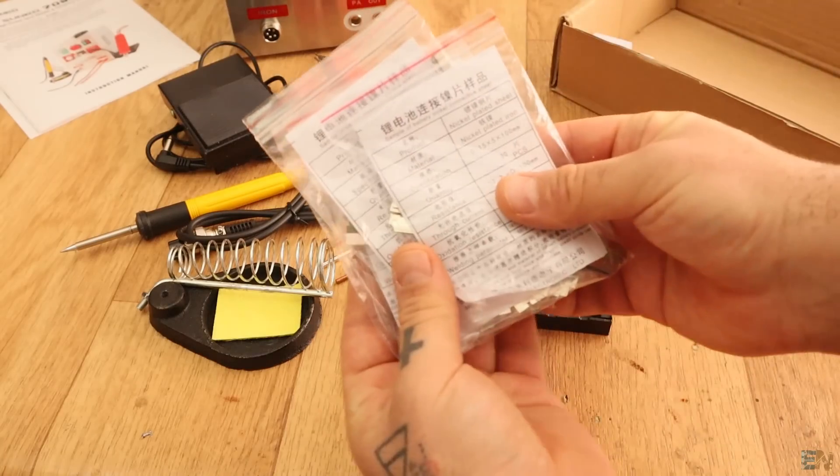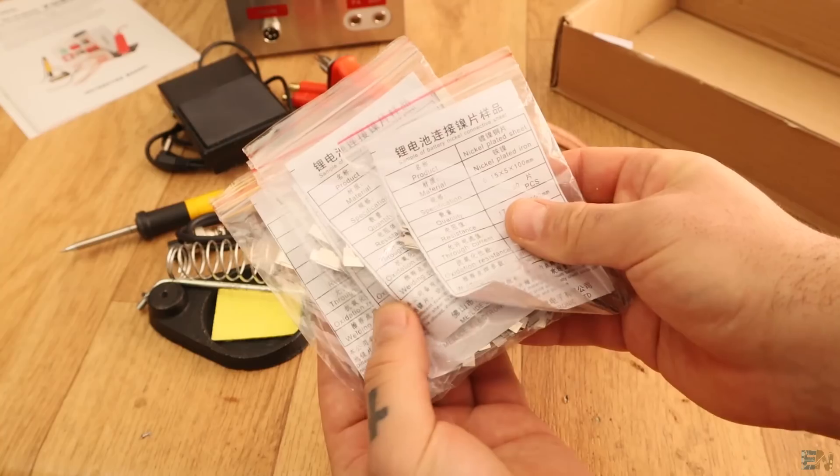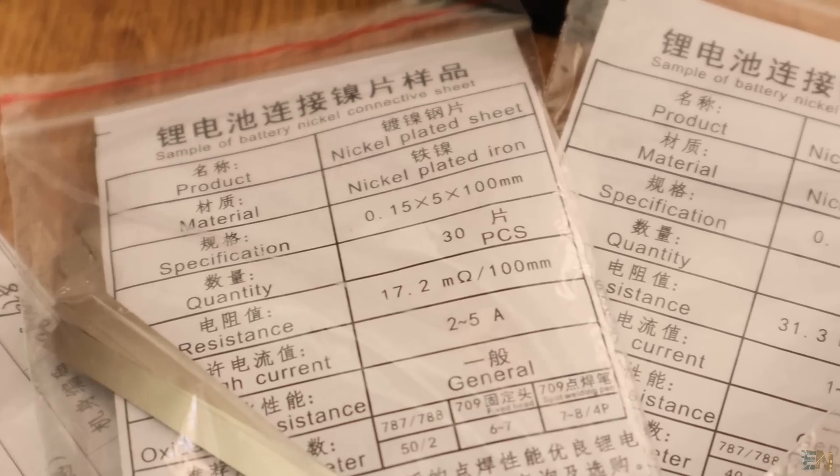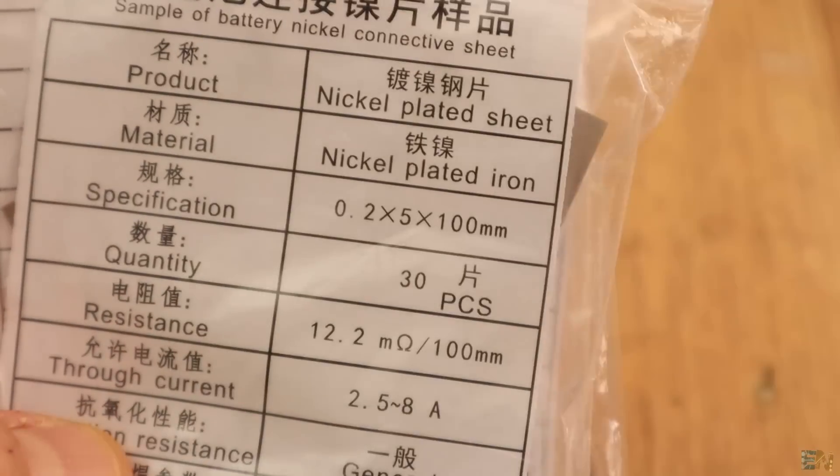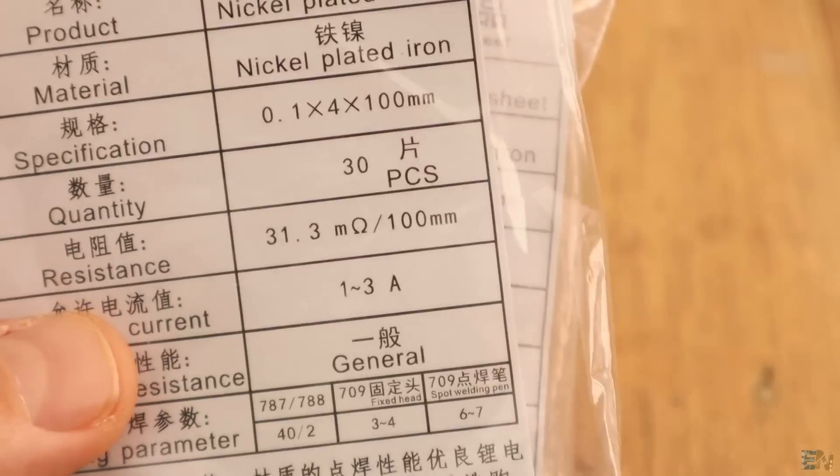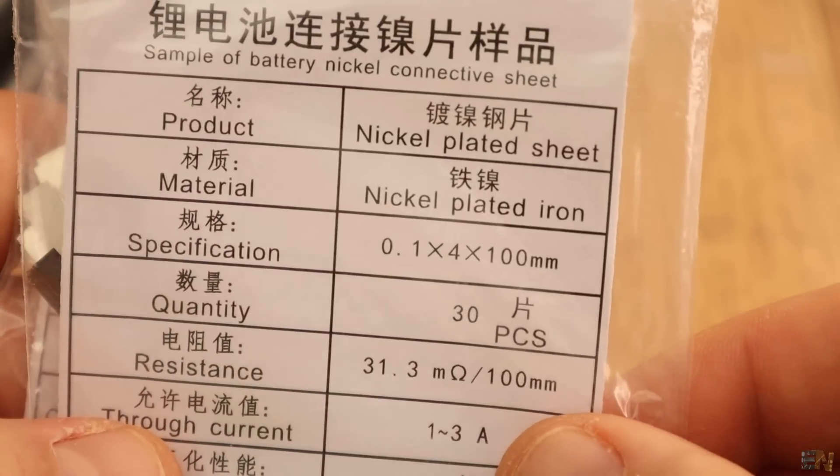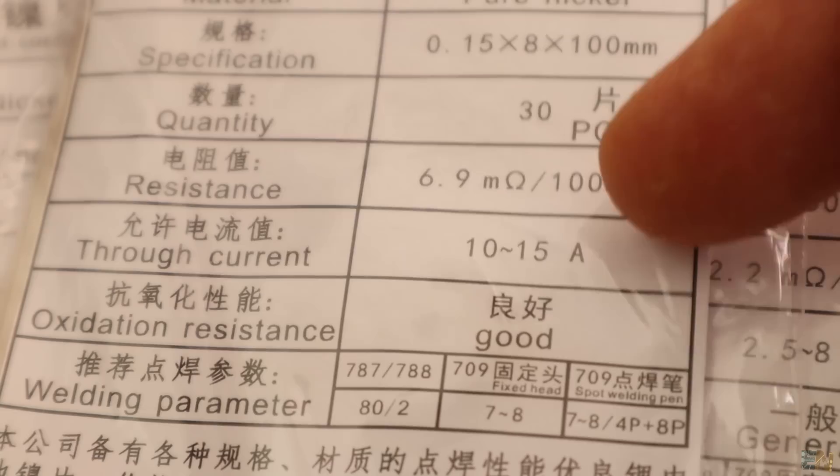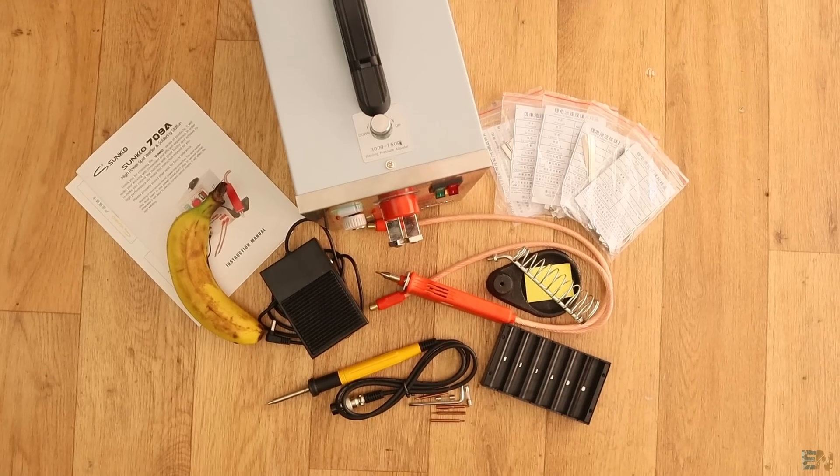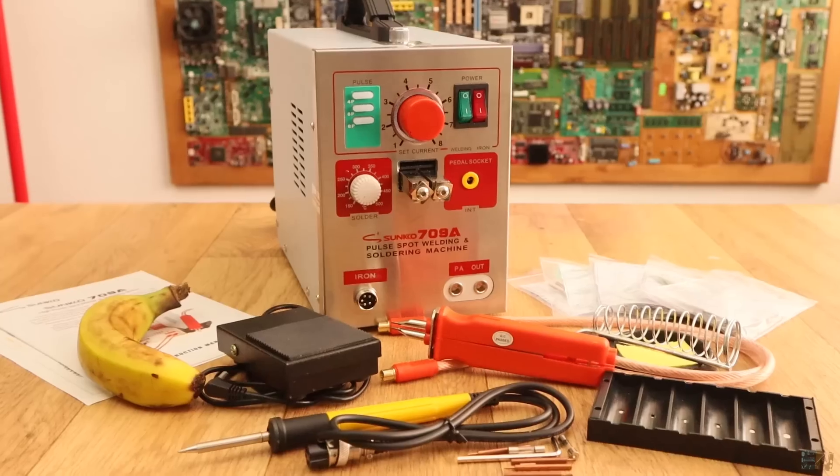Finally, we have some bags with some nickel plated sheets of different sizes and material, so we could make more tests, try different options and learn how to use this station. As you can see they are different width and different resistance and that's very important and we will see why later. We could also see the amount of current that the plate could withstand. And that's it, this is all that we receive inside of the box of this spot welder.